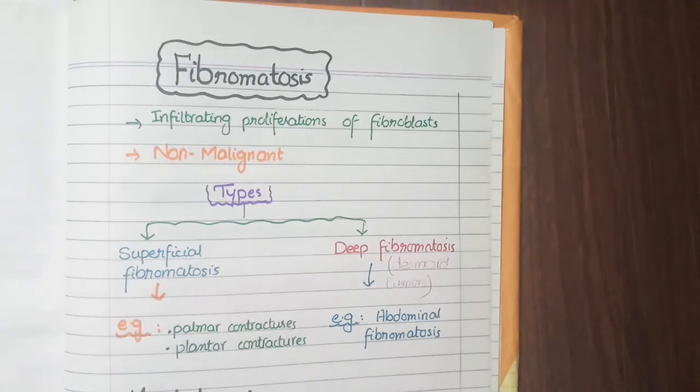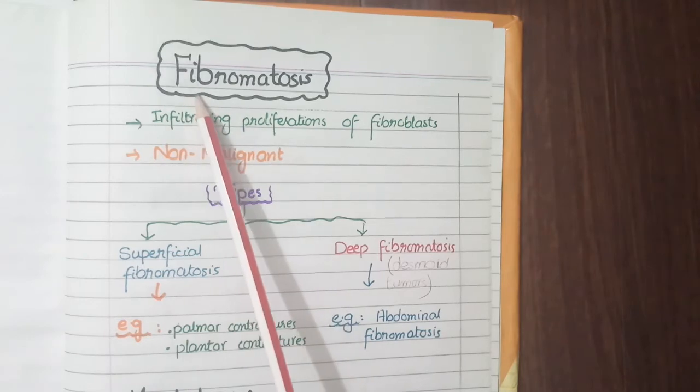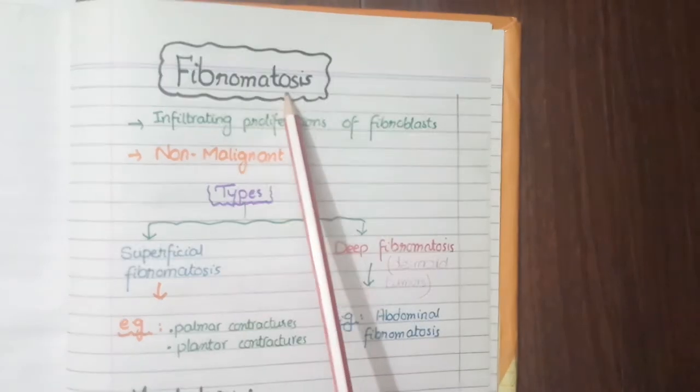In this video, we will discuss the pathological features of fibromatosis. In the word fibromatosis, fibro means fibroblasts and osis means excess growth.